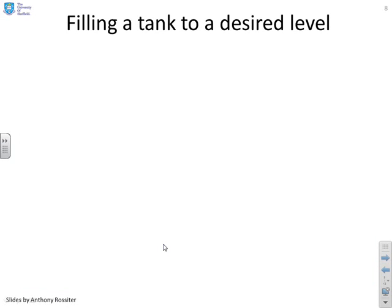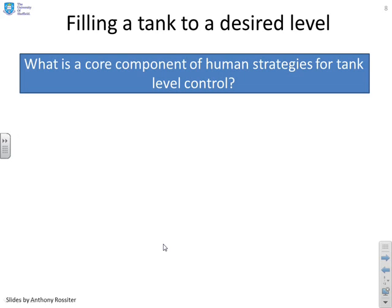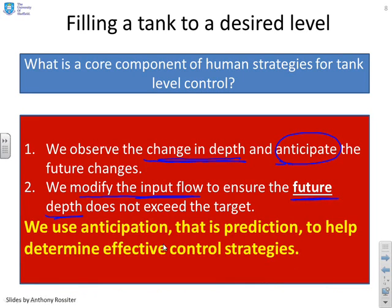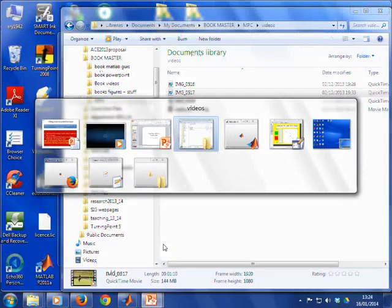What about filling a tank to a desired level — tank level control? What's a human strategy for that? We observe the change in depth and anticipate how the depth changes in the future. We use that anticipation to modify the input flow in order to ensure that the future depth does not exceed the target. Again, the key word is anticipation or prediction. We've got a simple MATLAB GUI example to demonstrate this.